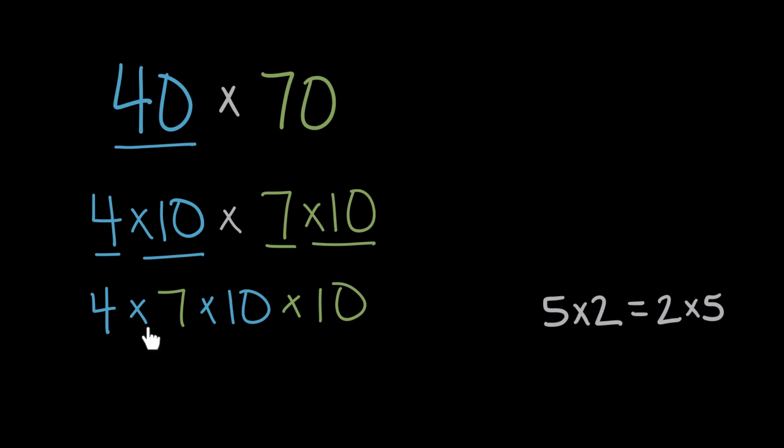And now I'll solve going across. Four times seven is 28. And then we have 28 times 10 and times another 10. Well, the pattern for times 10 that we know is when we multiply a whole number like 28 times 10, we will add a zero to the end. One zero for that zero in 10, because 28 times 10 is 28 tens.